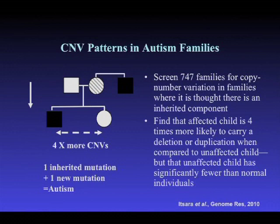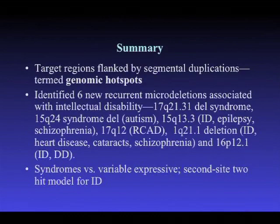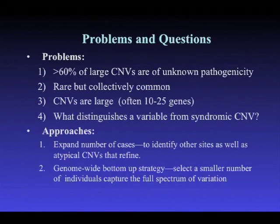In summary for the first part: we targeted regions flanked by segmental duplications — genomic hotspots — and identified six new recurrent microdeletions. Some were syndromic like the 17q21 deletion, some were variable in outcome. We have the distinction between syndromic CNVs versus variably expressive ones, and for the inherited ones we observe an excess of double hits, at least for 16p12. CNV work has some basic problems: events typically involve hundreds of kilobases and many different genes, so we don't know which specific gene is responsible. Also, outside hotspot regions, non-recurrent CNVs are each seen only once or twice in thousands of patients — individually rare but collectively common.